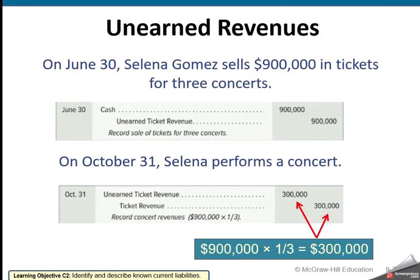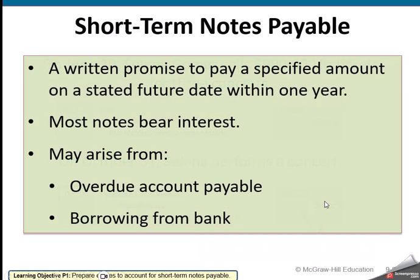Here we have Selena Gomez selling $900,000 in concert tickets. She collects the cash and records unearned ticket revenue. Then, as she performs the concerts, it comes out of unearned ticket revenue and goes to ticket revenue, because she has now earned the money.